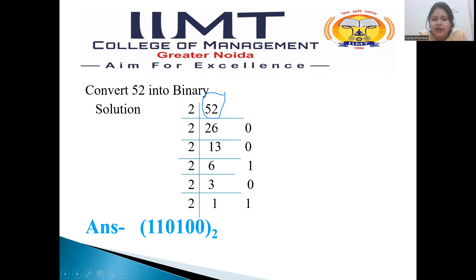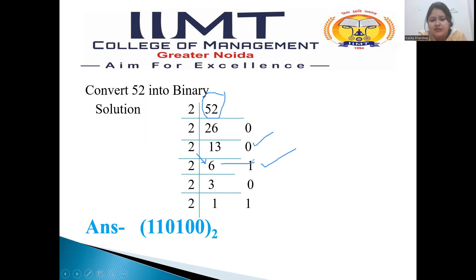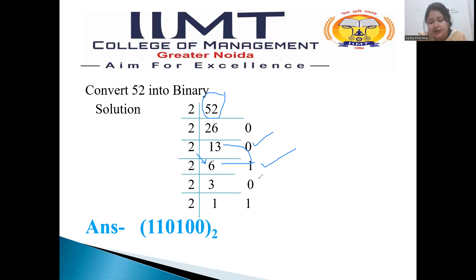Again, I will divide 26 by 2 — it will go 13 times and the remainder will be 0. Then again, I will divide 13 by 2 — it will go 6 times and the remainder will be 1. You can check the answer: if you multiply quotient by divisor and add the remainder, the answer should match. Then we will divide 6 by 2 — it will go 3 times and the remainder will be 0.